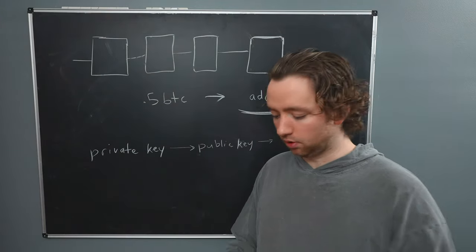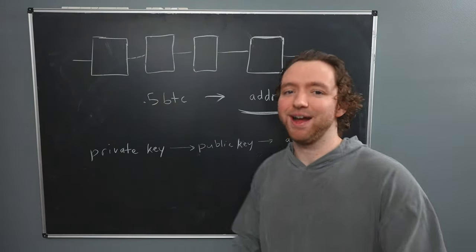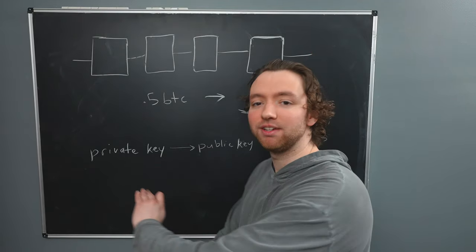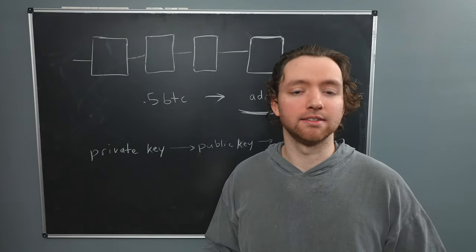Now, what does a private key look like? Well, here, let me show you mine. Psyche. I ain't dumb. But basically, a private key is going to be 64 characters long. Hexadecimal.